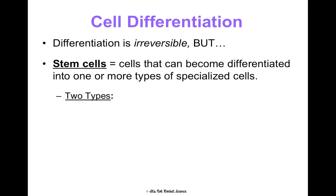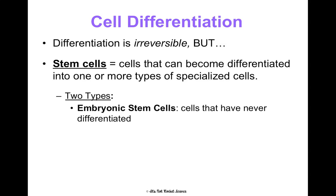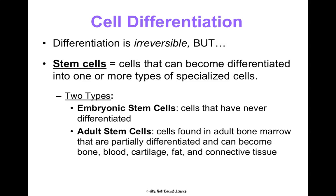We find stem cells in two places. Embryonic stem cells are stem cells in an embryo — in the womb — that have never been differentiated before. Adult stem cells are ones that adults have in their bone marrow. They've been partially differentiated, so you can't make them anything you want, but you can make them bone cells, blood cells, cartilage, fat, or connective tissues because they've been partially differentiated to be these types of cells. So they're still really useful, but not as useful as an embryonic stem cell.